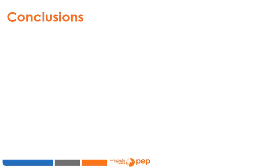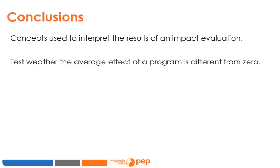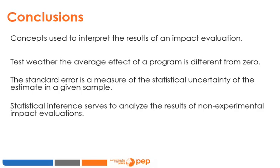In this module we discussed some of the concepts used to interpret the results of an impact evaluation. An impact evaluation produces estimates that can be used to test whether the average treatment effect of a program is different from zero. The standard error of an estimate is a measure of the statistical uncertainty of the estimate in the given sample. In the following modules we will use statistical inference to analyze the results of non-experimental impact evaluations.